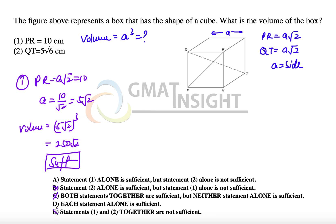Now, we are left with two choices only, option A and option D. The second statement here says that QT, which is equal to A root 3, is equal to 5 root 6.